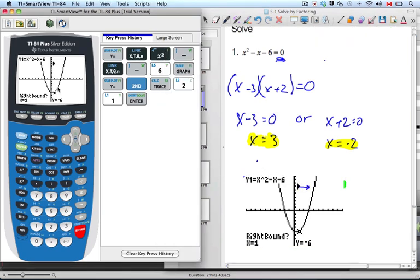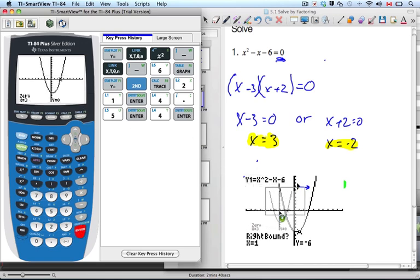So now when I go back to my calculator, it's asking me for the right bound. I know it's about 3, so I'm going to pick a number to the right of 3. I'm going to say 4.5. And my guess, I think it's going to be, let's say 4. And now it tells you what my answer actually is.